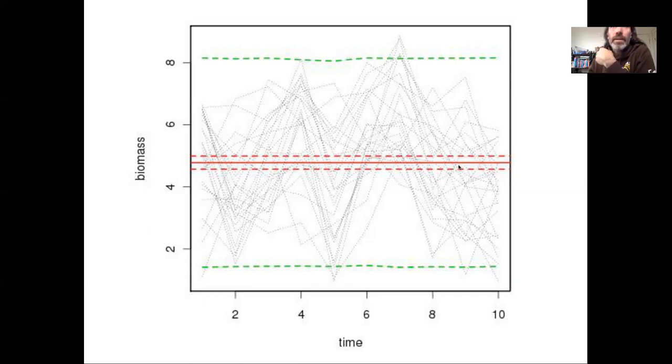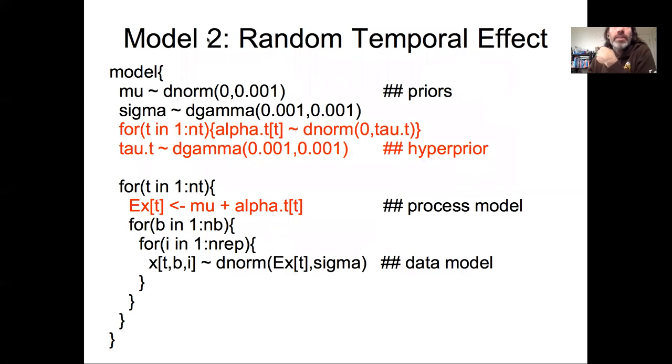Next, I'm going to think about adding this random time effect. The process model is a little bit more complicated now. The expected value at a particular time is going to depend on an overall global mean mu and a time random effect, this alpha t indexed for a specific time. We're going to loop over those different times, but in this case within that particular time we can then loop over block and individual because the expected value isn't changing with those. As before we have a prior on mu and a prior on sigma.